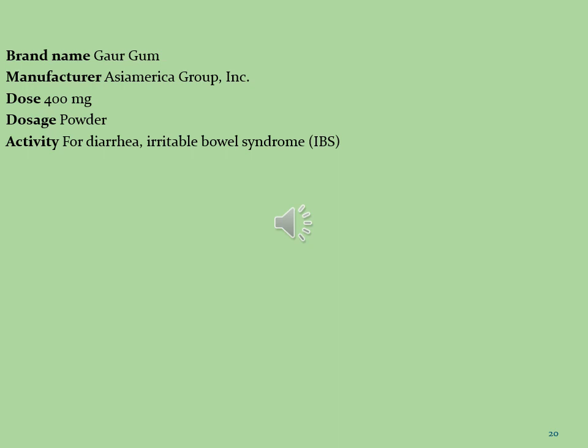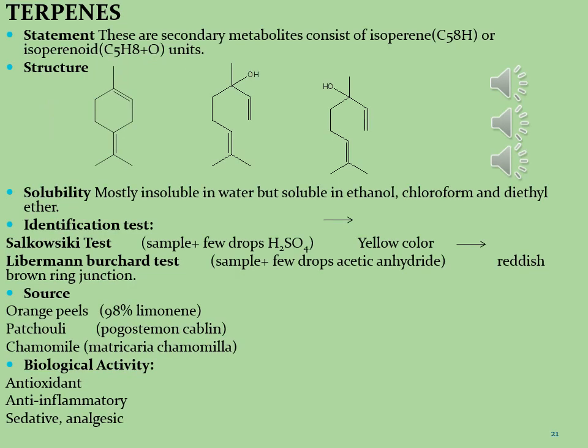Let's see what are the terpenes. Terpenes are a large and diverse class of organic compounds produced by a variety of plants, particularly conifers, and by some insects. They often have a strong odor and may protect the plants by deterring herbivores and by attracting predators and parasites of herbivores. These are secondary metabolites consisting of isoprene units (C5H8) for terpenes and isoprene units with oxygen (C5H8O) for terpenoids. There is good evidence that terpenes have direct physiological effects on the body, especially linalool and limonene.